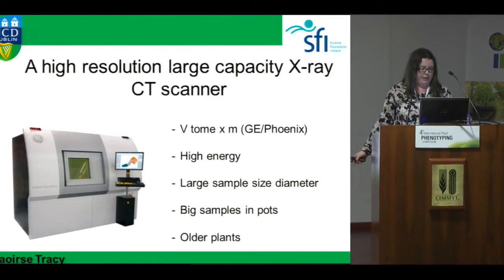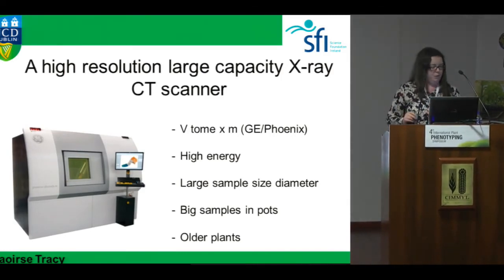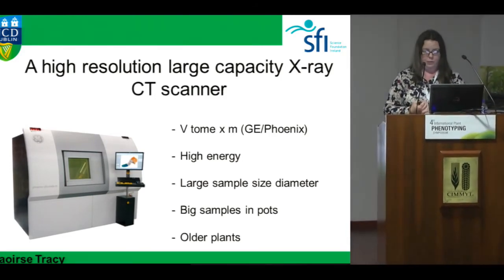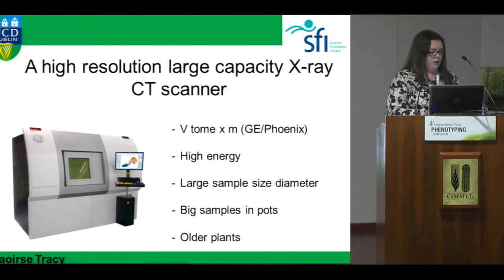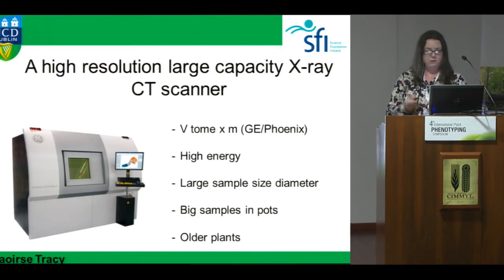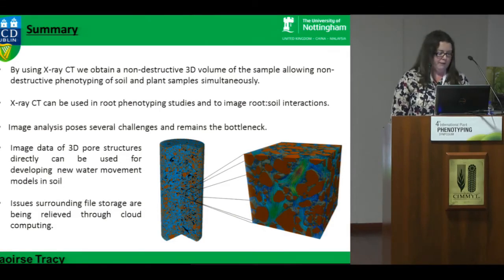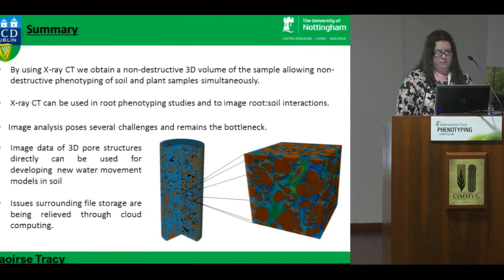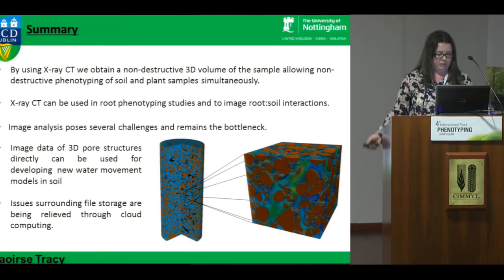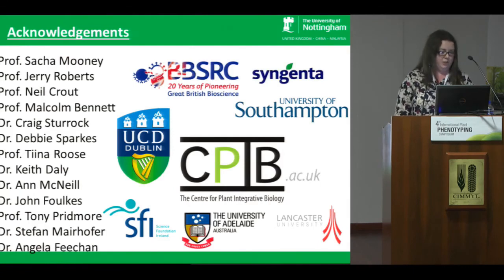At UCD I'm setting up my own group and will soon have a Nikon Metrology / GE Phoenix scanner. The first experiment will look at the effect of seedbeds on field bean establishment. UCD is an IPPN member so the scanner will be available to use. To summarize: using X-ray CT you can get 3D volumes non-destructively, which can be used in root phenotyping, looking at water movement through soil, and hopefully overcoming some of those root imaging challenges.